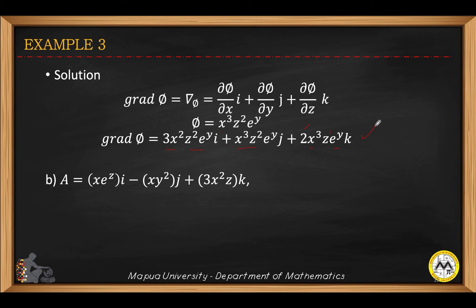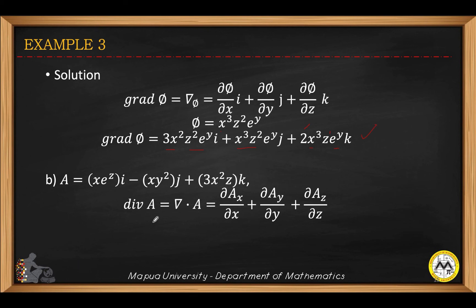Given a, what is the divergence? That is simply the dot product: we take d/dx times a_x, then d/dy times a_y, and d/dz times a_z. So the partial derivative of x·e^z with respect to x, then the partial of negative x·y squared with respect to y, and the partial of 3x²z with respect to z.